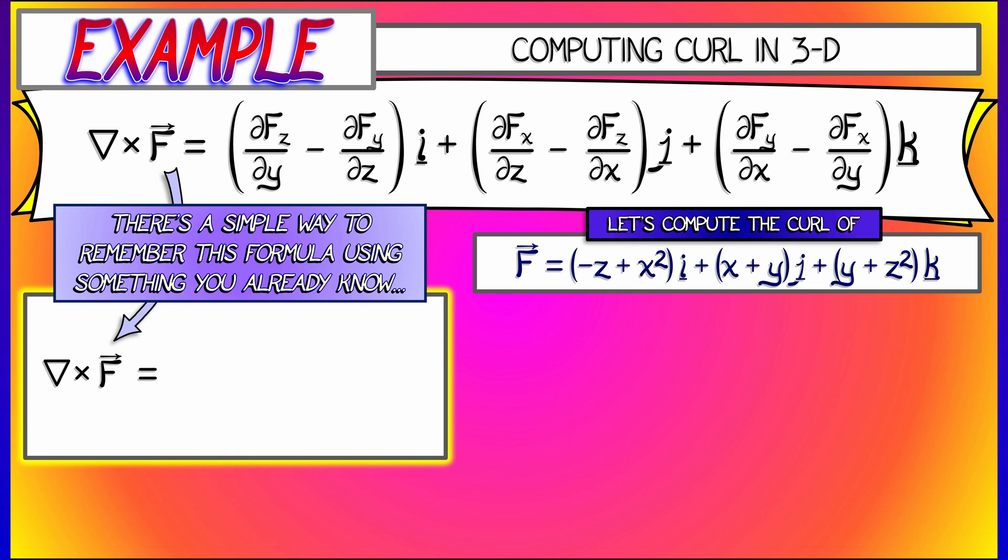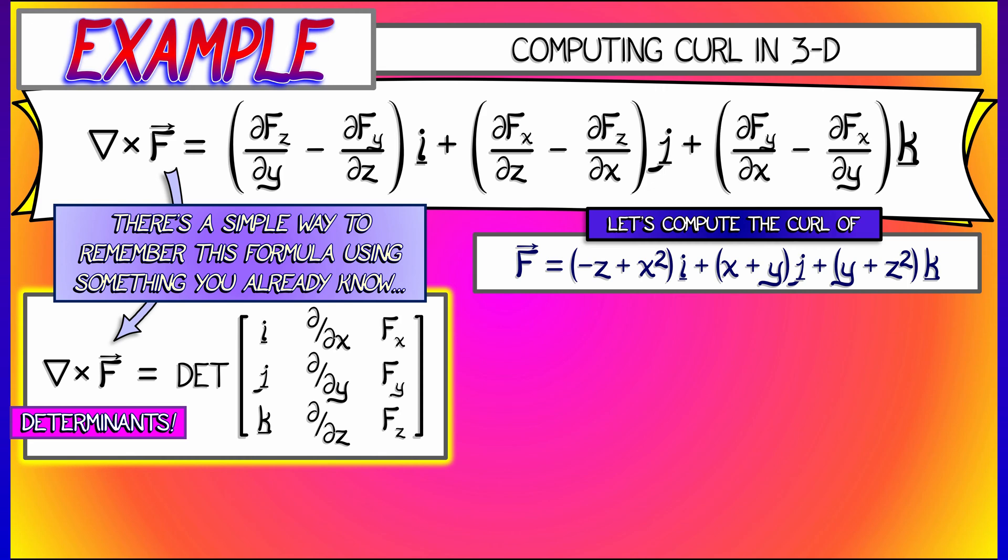Let's take the three components of this vector field and pack it into a determinant of a three by three matrix where the first column is I, J, K. The second column is the differential operators, partial partial X, partial partial Y, partial partial Z. And the last column is the three components of the vector field, FX, FY, FZ.